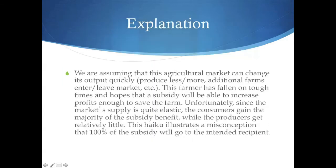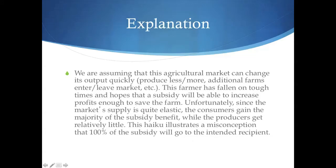Here's their explanation. We're assuming that this agricultural market can change its output quickly — produce more or less, with additional farms entering and leaving the market. This farmer has fallen on tough times and hopes a subsidy will increase profits enough to save the farm. Unfortunately, since the market supply is quite elastic, the consumer gains the majority of the subsidy benefits, while the producer gets relatively little. This haiku illustrates the misconception that 100% of the subsidy goes to the intended recipients. I think this is very sophisticated thinking for economics students at the principles level and a good application of using art to illustrate an economic concept.